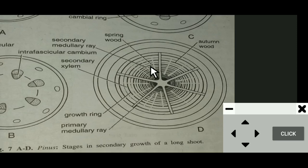This cambium ring cuts off secondary xylem towards the inner side and secondary phloem towards the outer side. By the continuous activity of the vascular cambium, secondary vascular tissues are added, increasing the thickness of the stem. The primary phloem becomes crushed due to the pressure of the secondary vascular tissue.